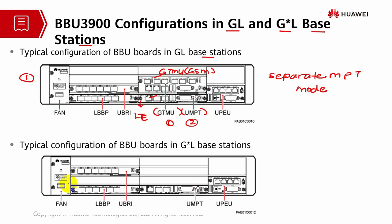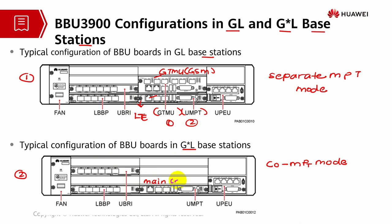In GL mode, they have two main control boards. However, the second example is G times L, meaning it's a co-MPT mode. In co-MPT mode, they have only one main control board, and this single board is in charge of both GSM and LTE mode. That's the major difference.